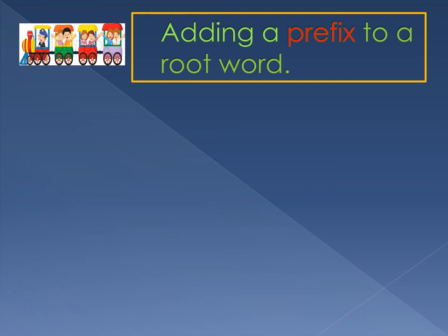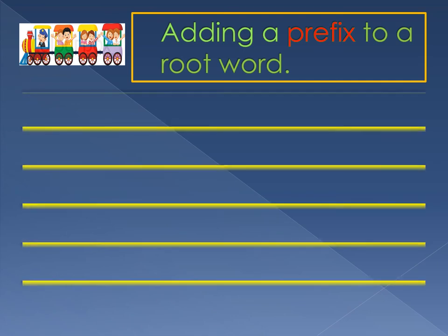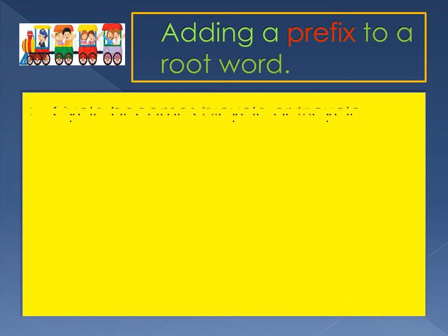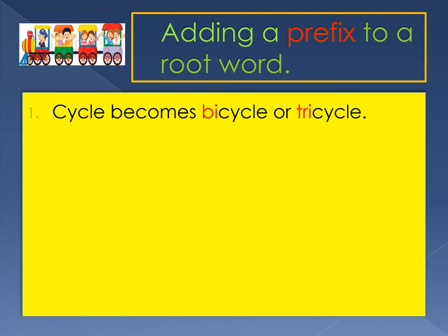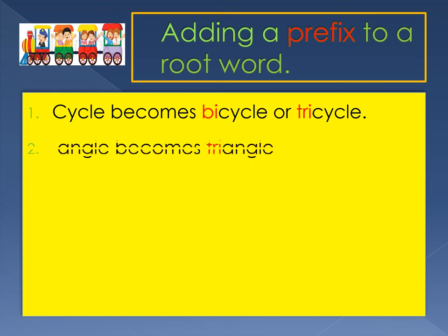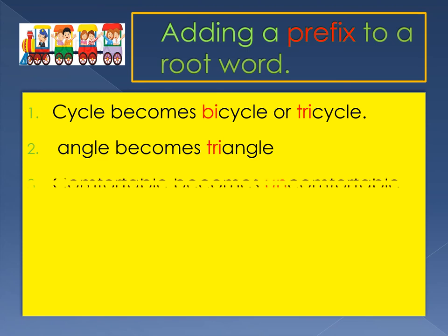Adding a prefix to a root word: 'cycle' can be joined with 'bi' or 'tri'. When you add 'bi' to 'cycle' it becomes 'bicycle'. When you add 'tri' to 'cycle' it becomes 'tricycle'. Now let's take the root word 'angle'. When we add the syllable 'tri' to 'angle' it becomes 'triangle'.